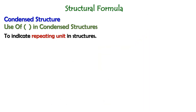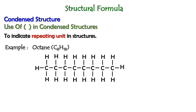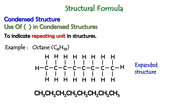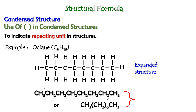The bracket symbol can also be used in condensed structure to indicate a repeating unit. For example, if we have octane with the formula C8H18, this is the expanded structure. The condensed structure would be written like this, and since we have the repeating unit CH2 in the molecule, we can write the condensed structure using bracket notation — both representations are valid condensed structures of the molecule.